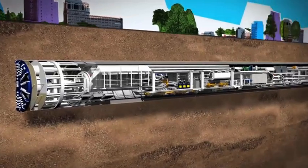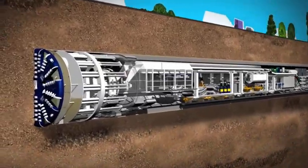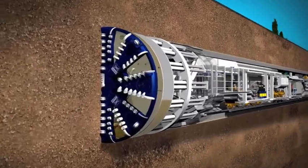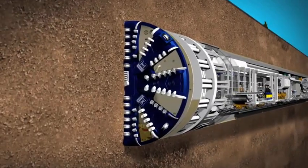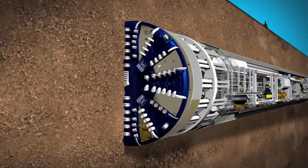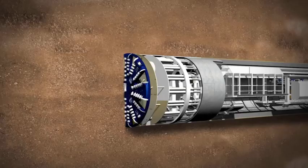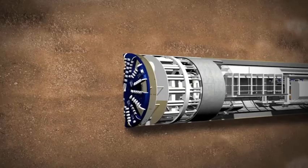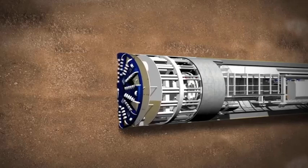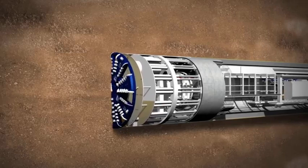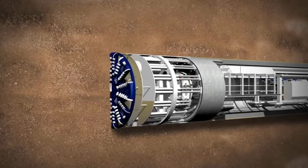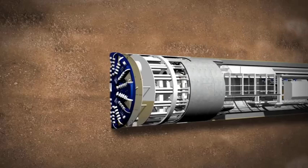The mixed shield TBMs dig in a different way to the earth-pressure-balanced TBM and will be used for tunneling in waterlogged conditions such as below the Thames. Mixed shield TBMs use bentonite, which is a slurry of clay and water, to support the excavation face and act as a suspension medium for excavated material.